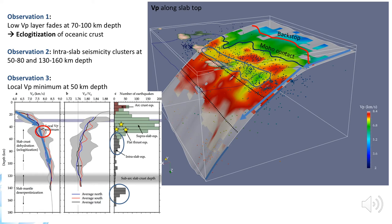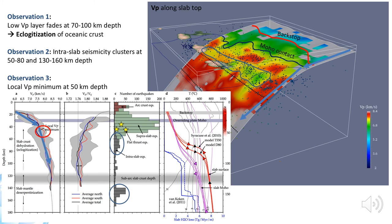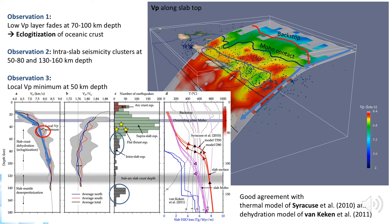These three observations together suggest that we are seeing multiple stages of slab dehydration: first the crust dehydrating at 50 to 100 km depth, and then the lithospheric mantle dehydrating at 130 to 160 km depth. We can compare this with the predictions made by Van Keken and others, based on the thermal models of subduction of Syracuse et al. and on phase diagrams. The blue lines represent water loss as a function of depth, and there is good agreement between the steps of fast water release and the depth of the seismicity clusters. The shallower cluster also corresponds to the depth range where crustal eclogitization happens, based on the observed increase in seismic velocity. So from looking at Vp along the slab, this slow spread crust actually behaves not very differently from what models predict for normal oceanic crust, with the exception of some significant lateral variability.